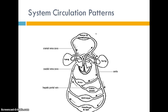To summarize: we have the hepatic artery, the hepatic portal vein, and the hepatic vein. In the end, they all make their way back to the inferior vena cava.